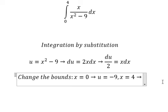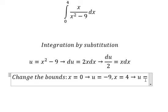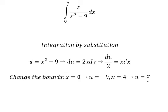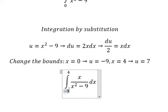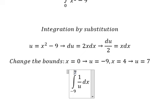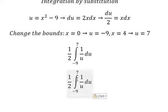Now we need to change 0 to negative 9, and 4 to 7. This one we change for u, dx we change for du over 2, and now we have the integral from negative 9 to 7 of one-half times 1 over u du.